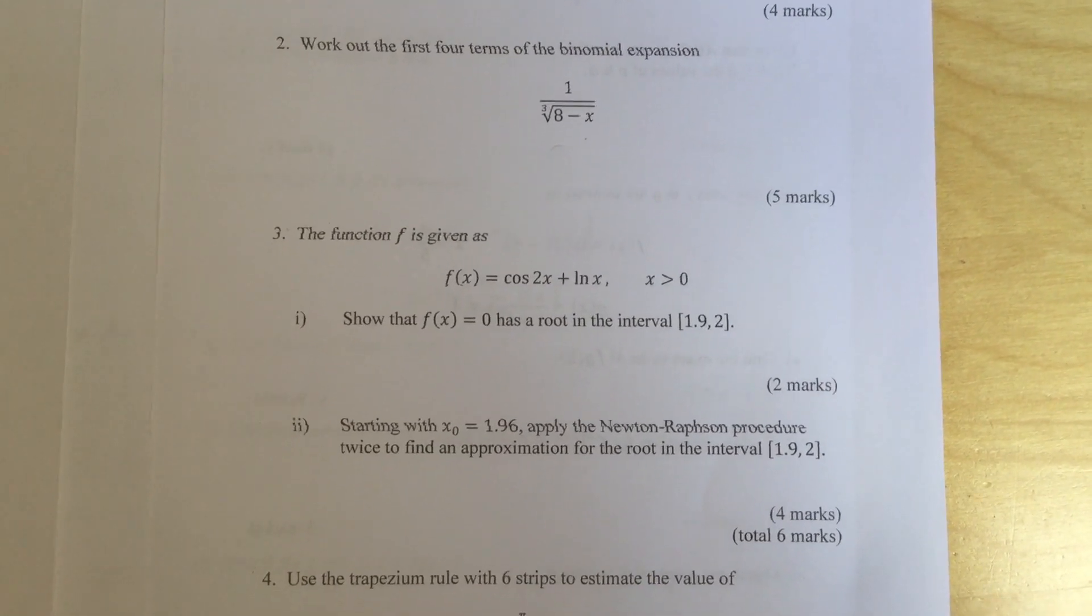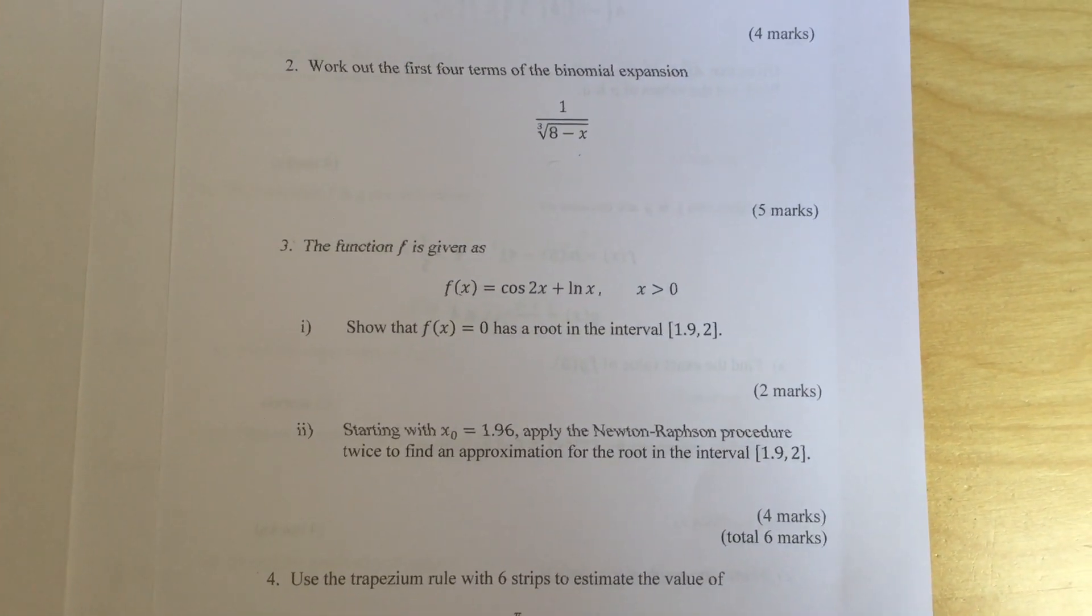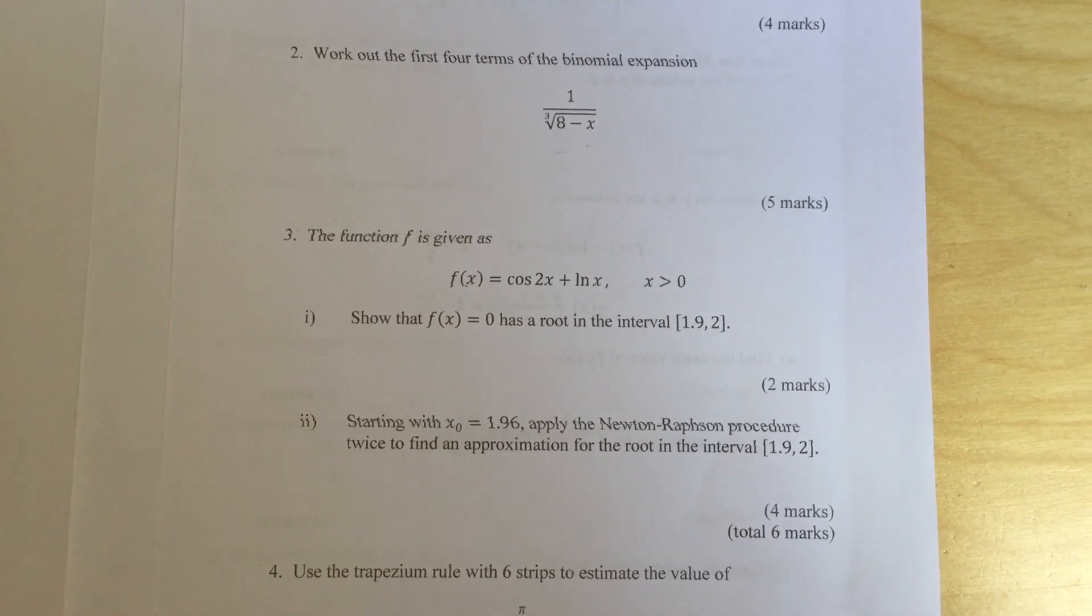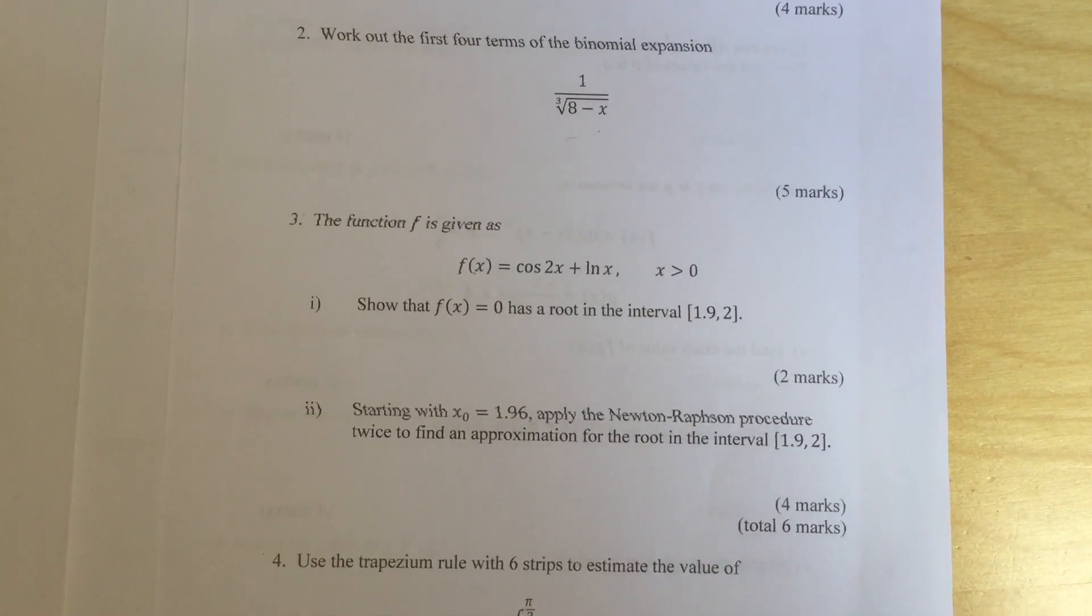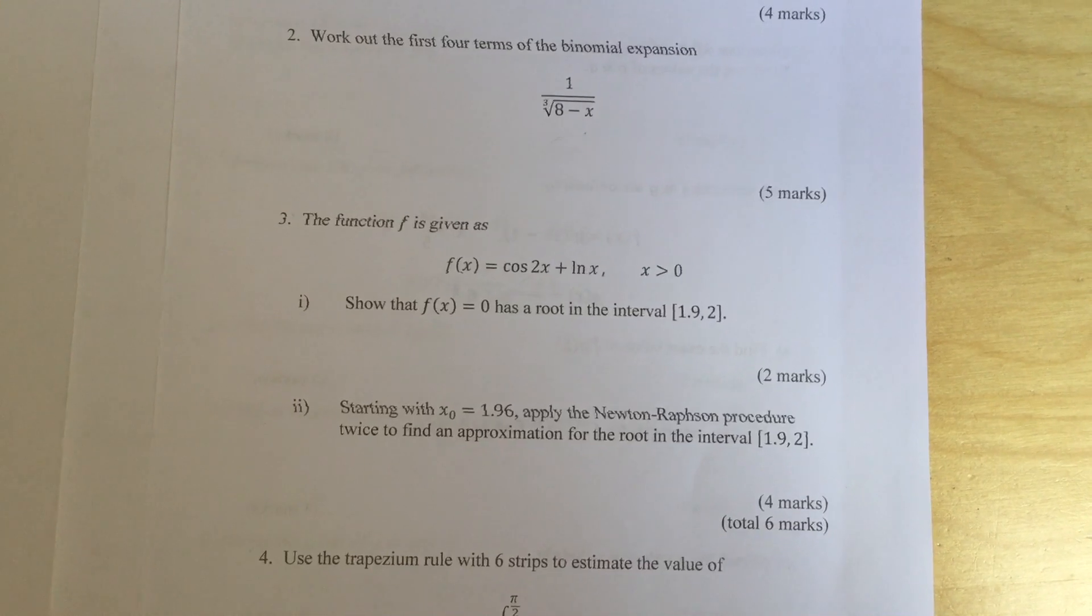Part 2: Starting with x0 equals 1.96, apply the Newton-Raphson procedure twice to find an approximation for the root in the interval 1.9 to 2.